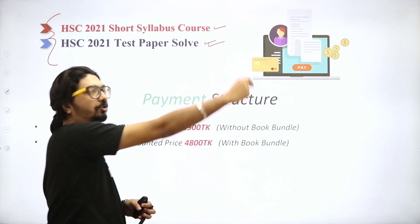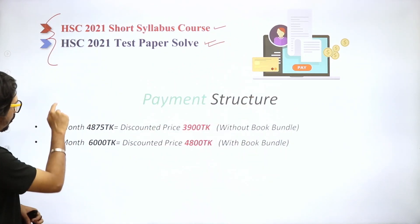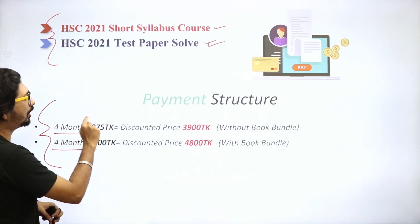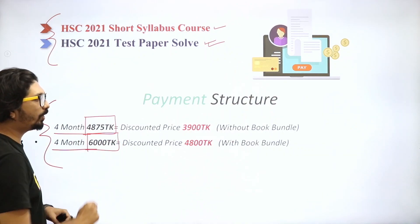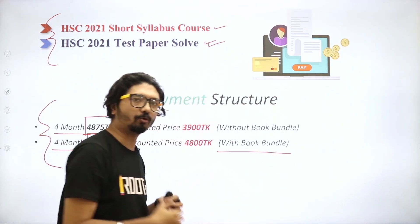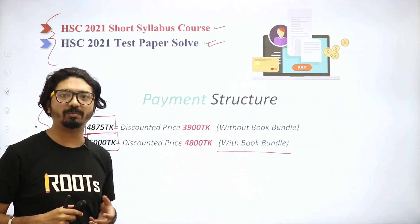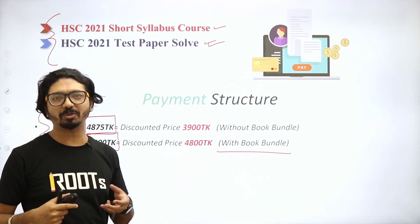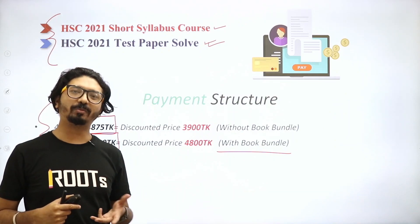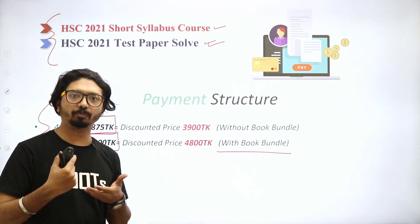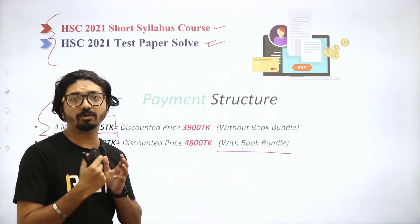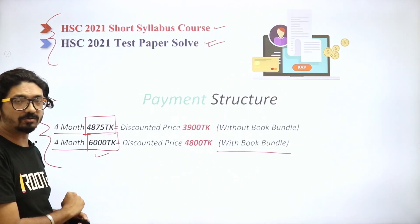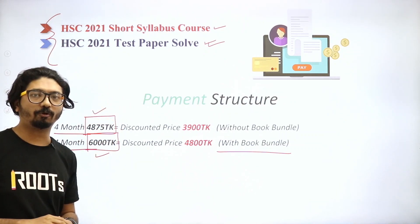The duration of this course is 4 years. This course comes with books from Lecture Publications — physics, chemistry, math, ICT, and test papers. With the book bundle, the fee is 6000. Without the book bundle, it is 4875.